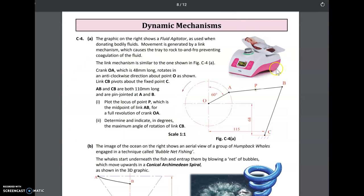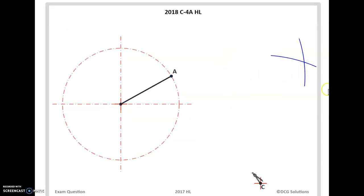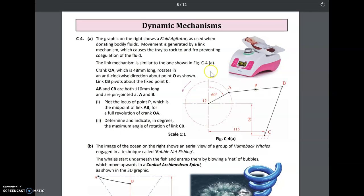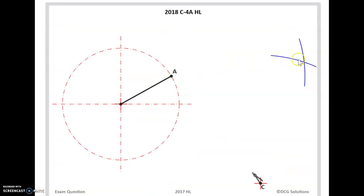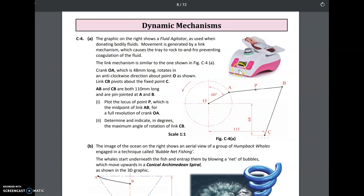To get the distance for point B, which is out here, we know that it's a set distance from A and C. The question tells us that AB and CB are 110 millimeters long, so we're coming from A 110 and from C 110 to get that point there.